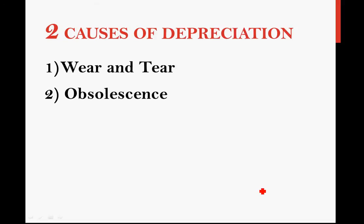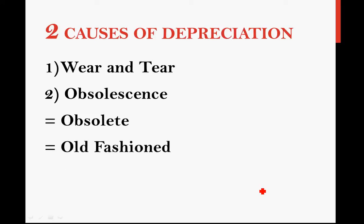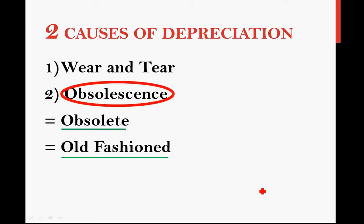Number two is obsolescence. This word is pretty hard for students to memorize — it's not a word you commonly see. Obsolescence comes from the root word 'obsolete,' and another word for obsolete is old-fashioned. Just to remind you: in the exam, you should not write 'obsolete' or 'old-fashioned.' I only used those terms to help you understand and remember, but in the exam you should use the textbook word: obsolescence. So the two causes of depreciation are number one, wear and tear, and number two, obsolescence.